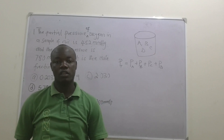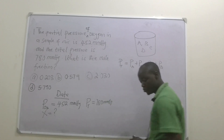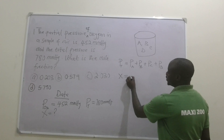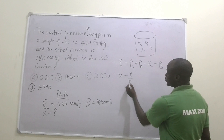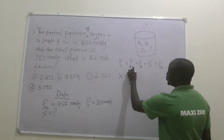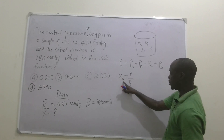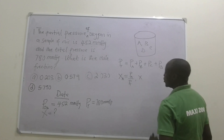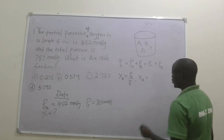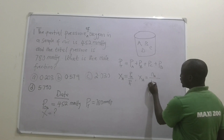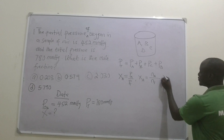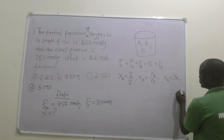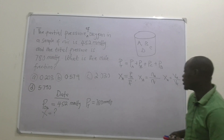We also have a way of calculating the mole fraction. There are three formulas that can be used. The mole fraction can be calculated as the partial pressure of the gas divided by the total pressure. It can also be calculated as the number of moles of the gas divided by the total number of moles, or as the partial volume of the gas divided by the total volume.